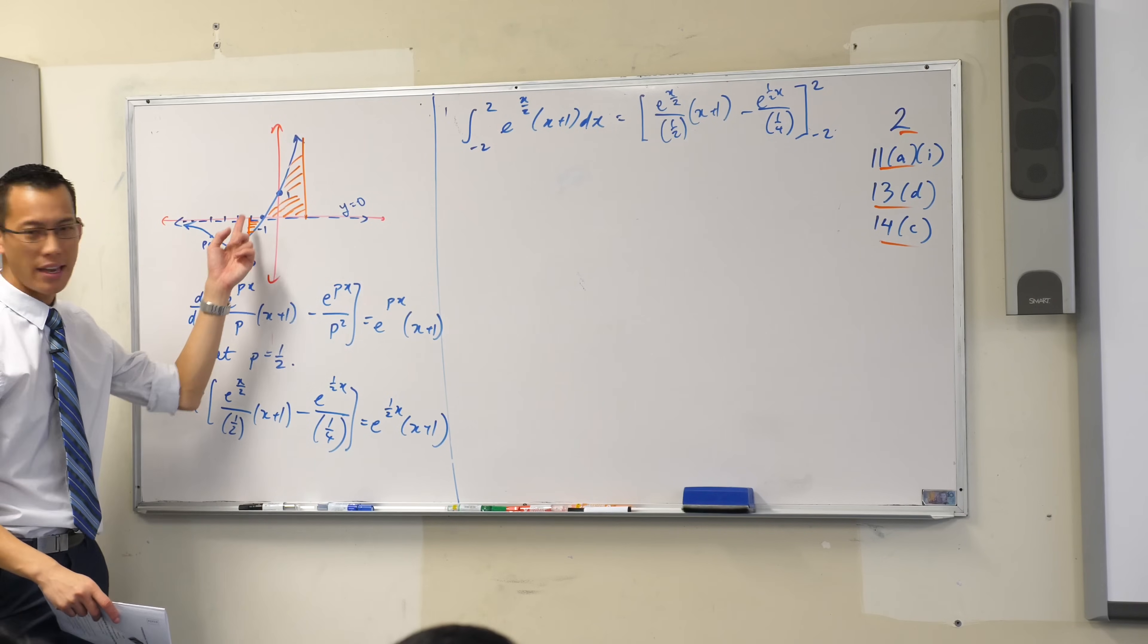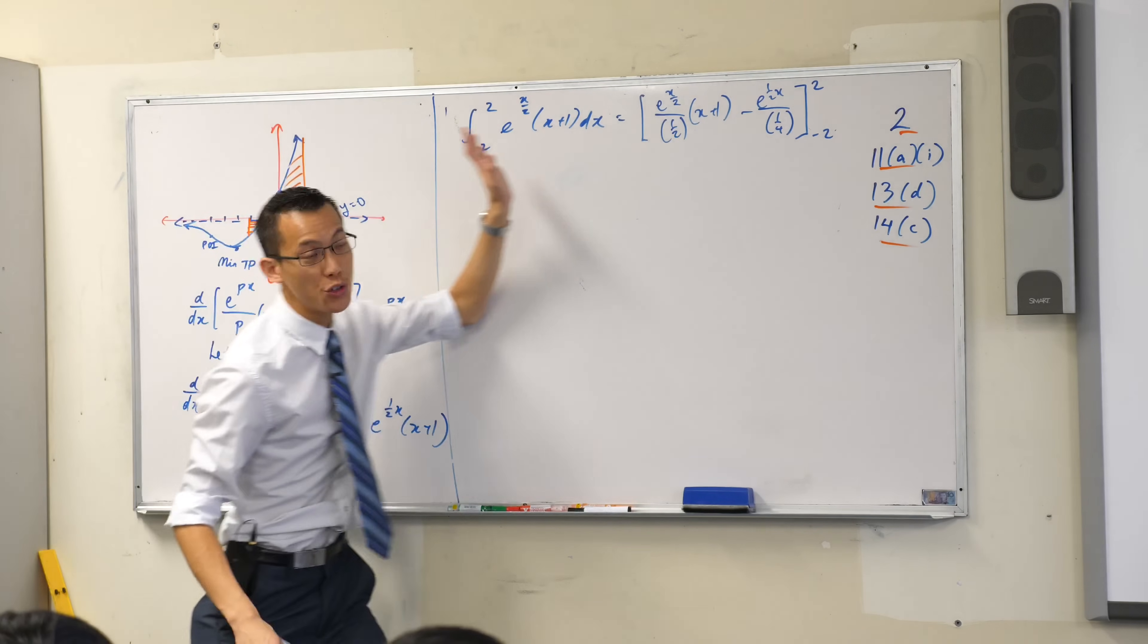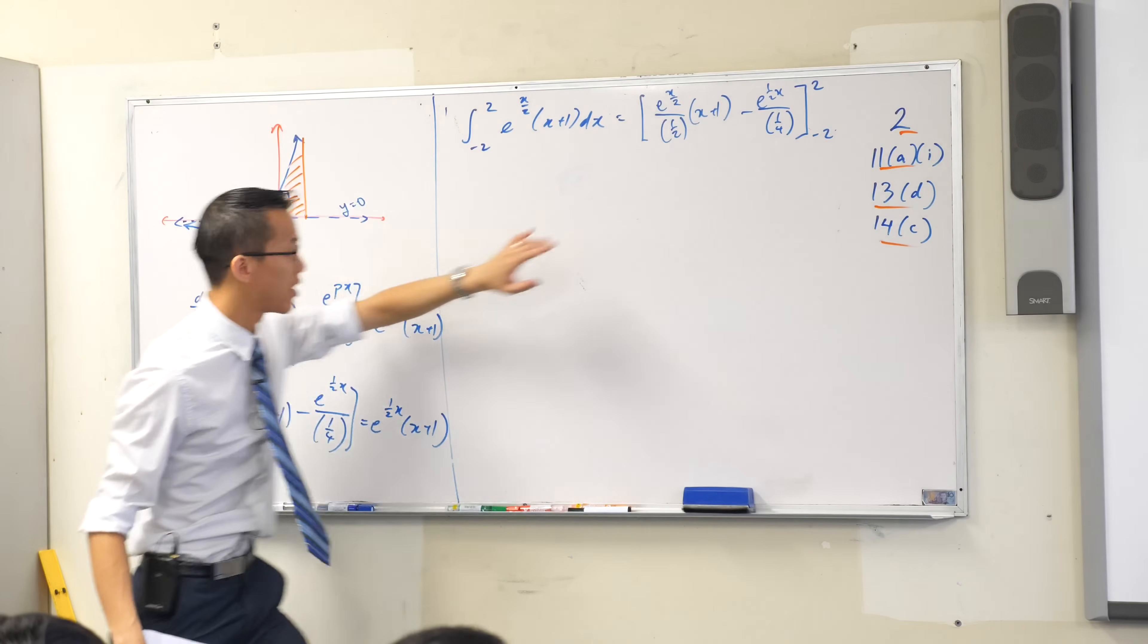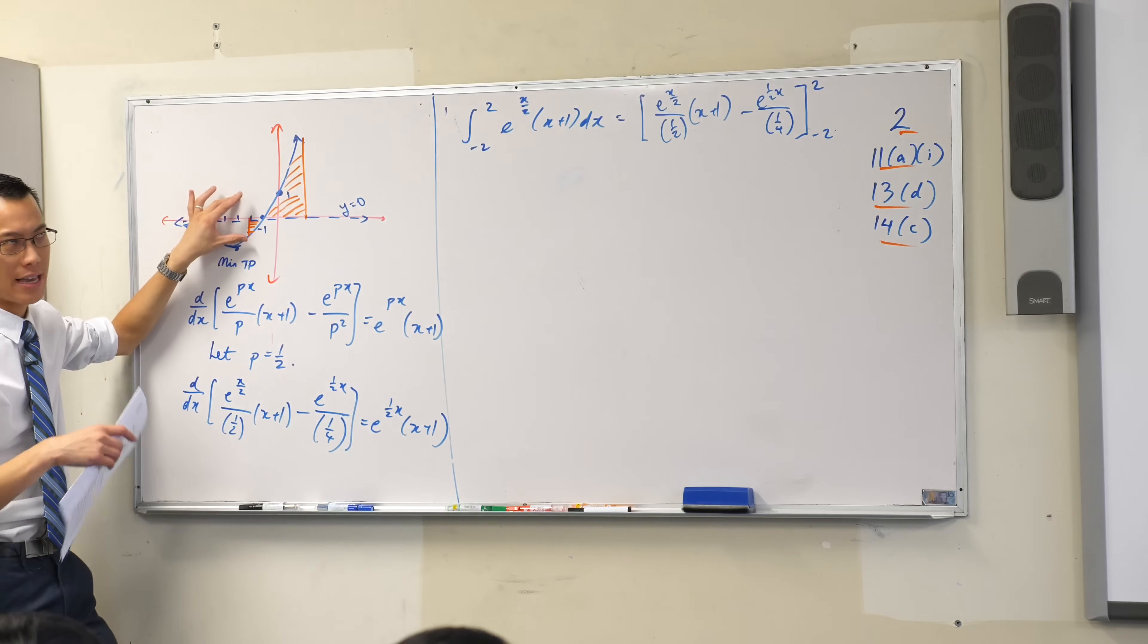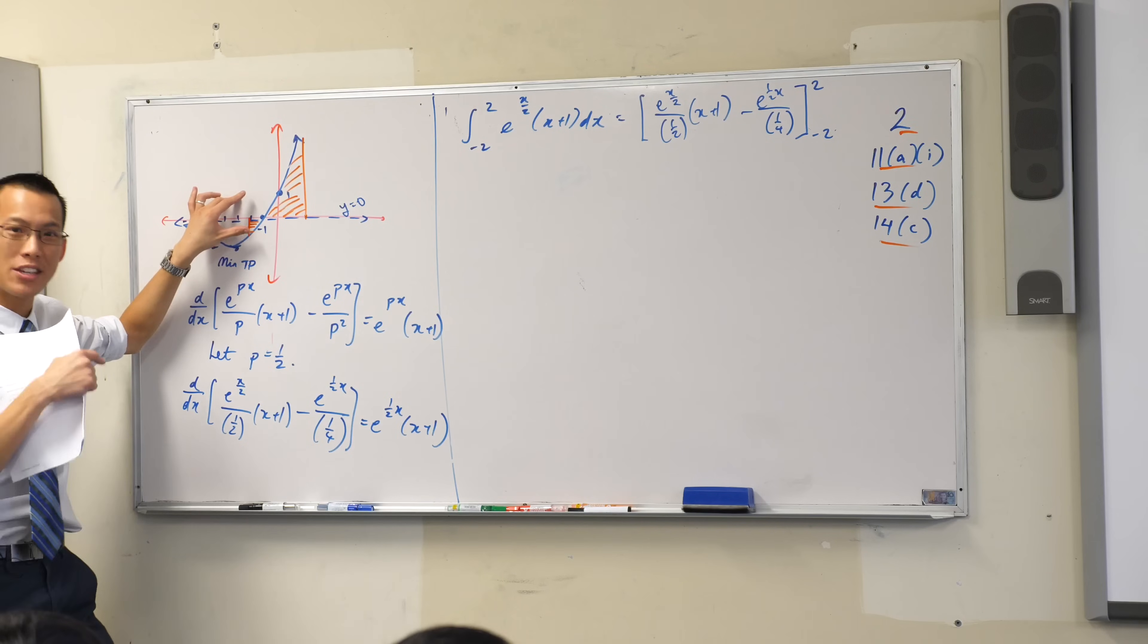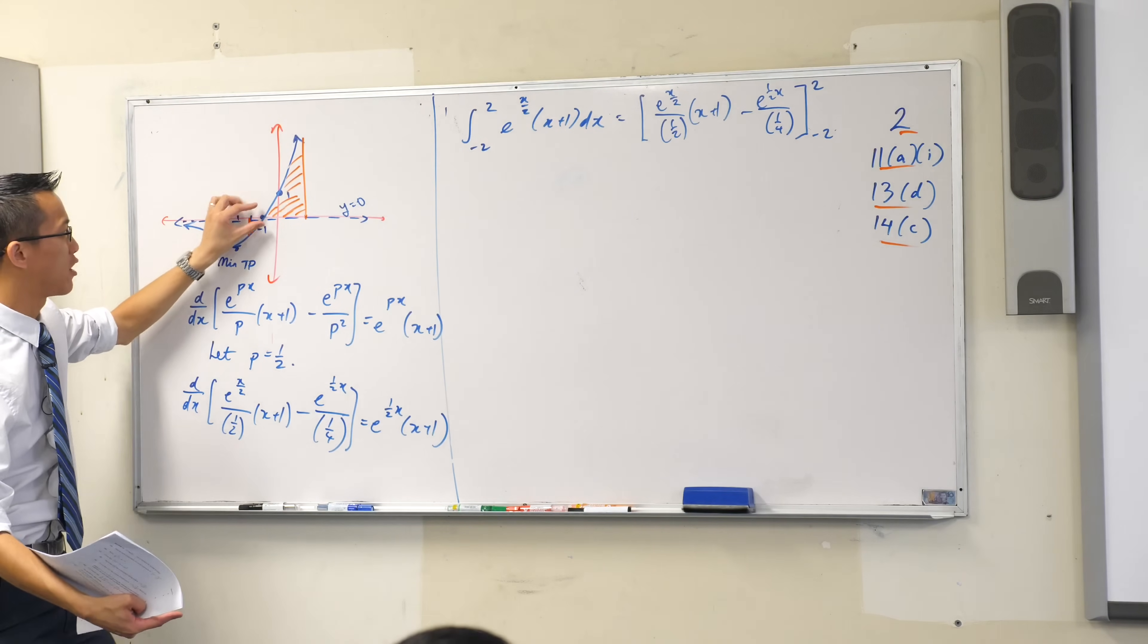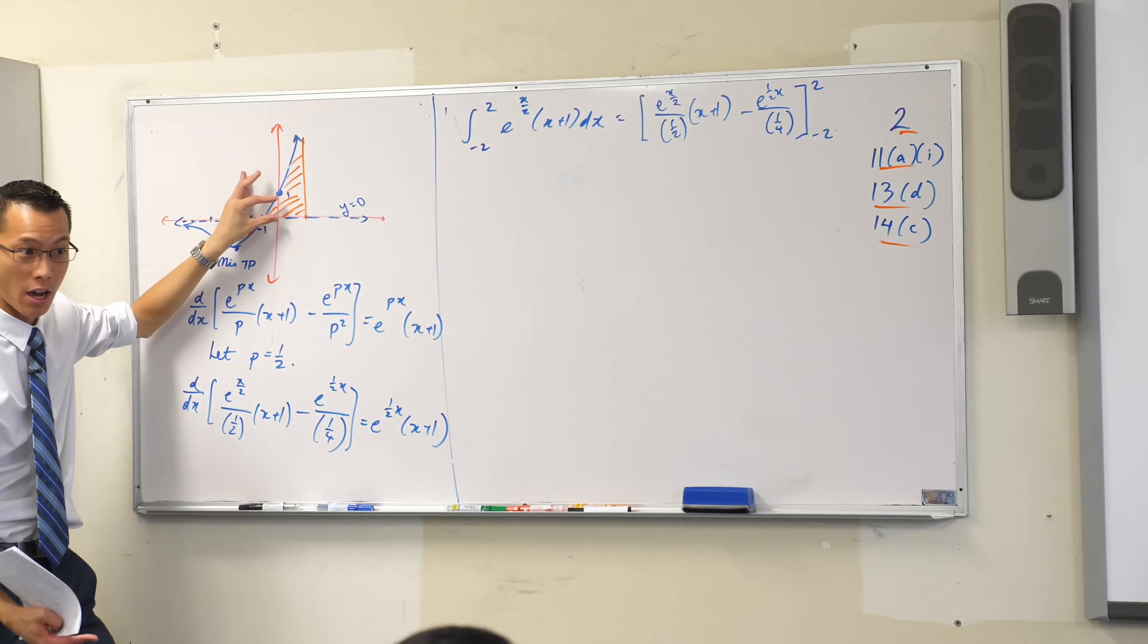There's negatives and positives. If I just do this, this part beneath the axis will be treated as negative. So then it will cancel out with part of this over here. Does that make sense?